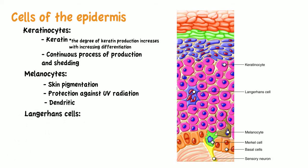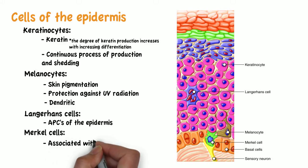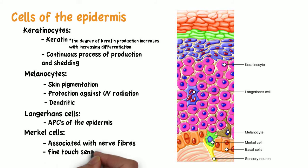Langerhans cells are the antigen-presenting cells of the epidermis. They are important for defense against surface pathogens and may present antigens to lymphocytes in the skin or migrate to lymph nodes. Merkel cells are specialized cells that reside in the basal layer in association with nerve fibers and are responsible for fine touch sensation.